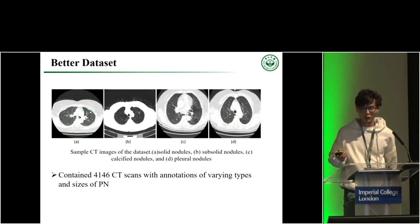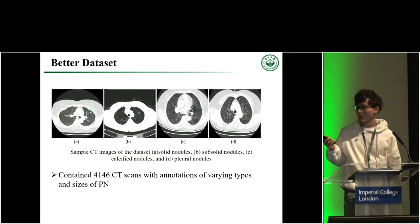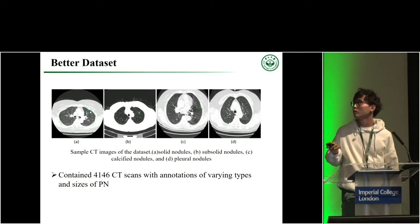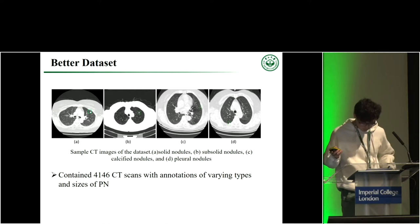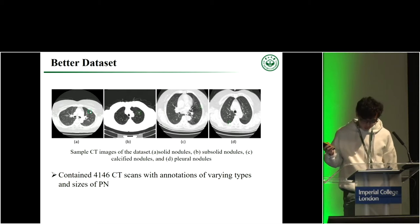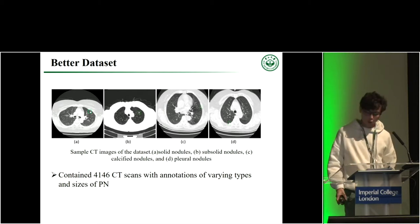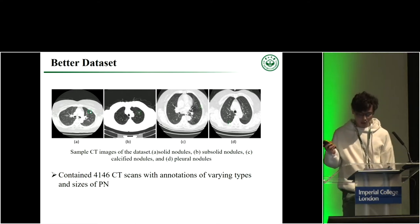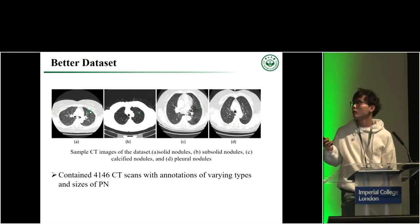In our work, we collected a large-scale dataset containing 4,146 CT scans with annotations of varying types and sizes of pulmonary nodules. It contains eight categories of pulmonary nodules, including ground glass nodules, which are hard to detect and clinically important, but are not usually included in existing datasets.